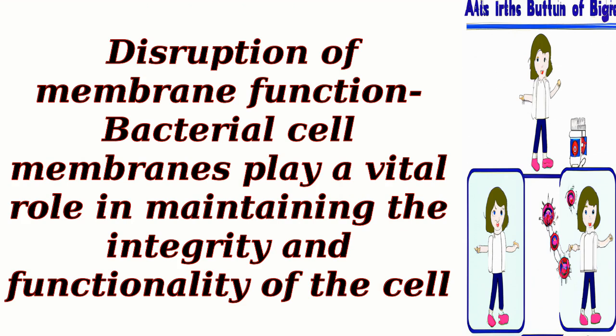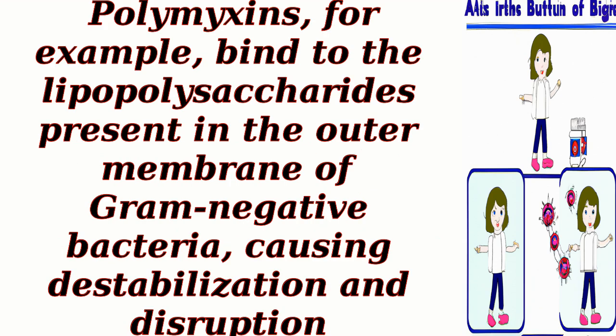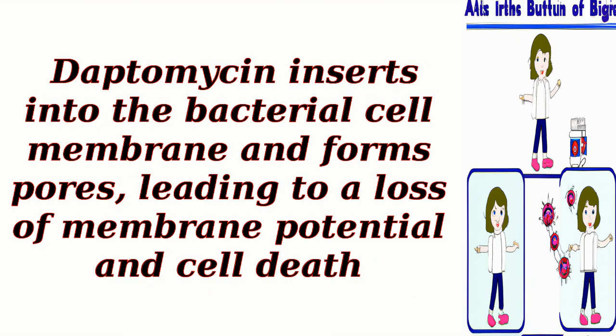Disruption of Membrane Function: Bacterial cell membranes play a vital role in maintaining the integrity and functionality of the cell. Antibiotics like polymyxins and daptomycin interact with the bacterial cell membrane, causing disruption and leakage of cellular contents. Polymyxins, for example, bind to the lipopolysaccharides present in the outer membrane of gram-negative bacteria, causing destabilization and disruption. Daptomycin inserts into the bacterial cell membrane and forms pores, leading to a loss of membrane potential and cell death.